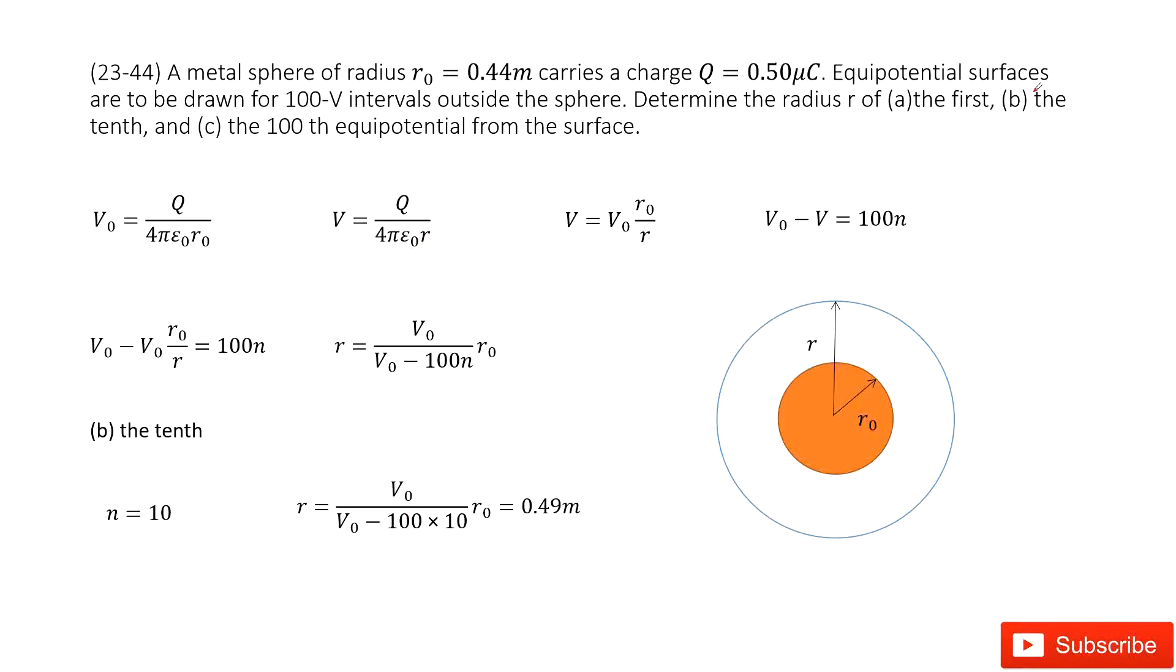The second case n equal to 10, right? This is the 10th equipotential surface. So n equal to 10. So we input the n inside. Input the V naught, R naught inside. We get the answer there.